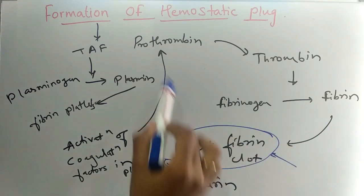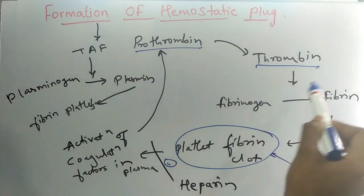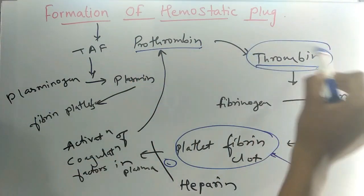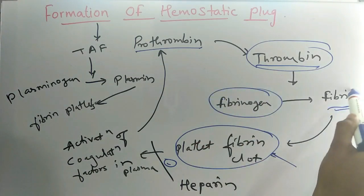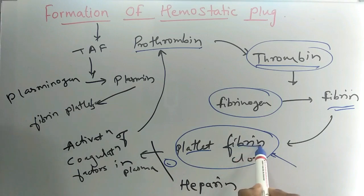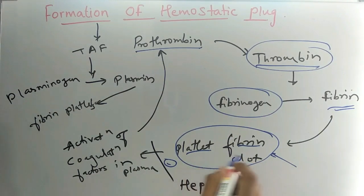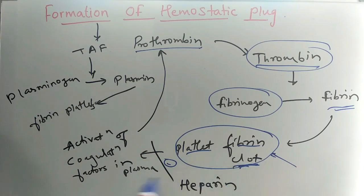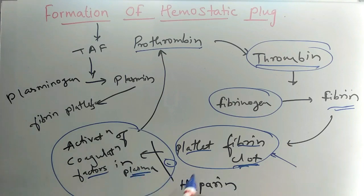When intracellular calcium is elevated, a platelet fibrin clot forms. Prothrombin is converted to thrombin, and thrombin helps convert fibrinogen to fibrin, which leads to the platelet fibrin clot. Fibrin adheres to the platelets, forming the clot. This step involves activation of coagulation factors in plasma and is inhibited by heparin.